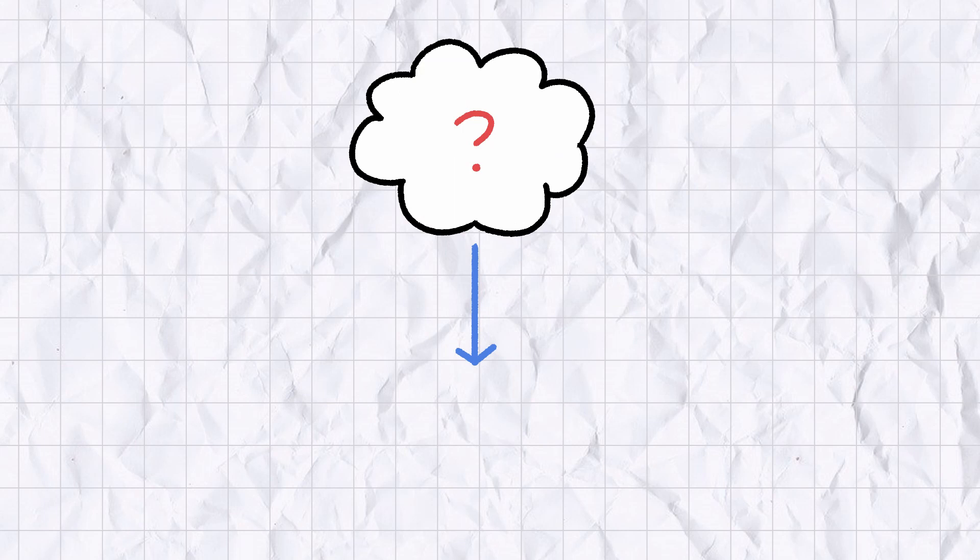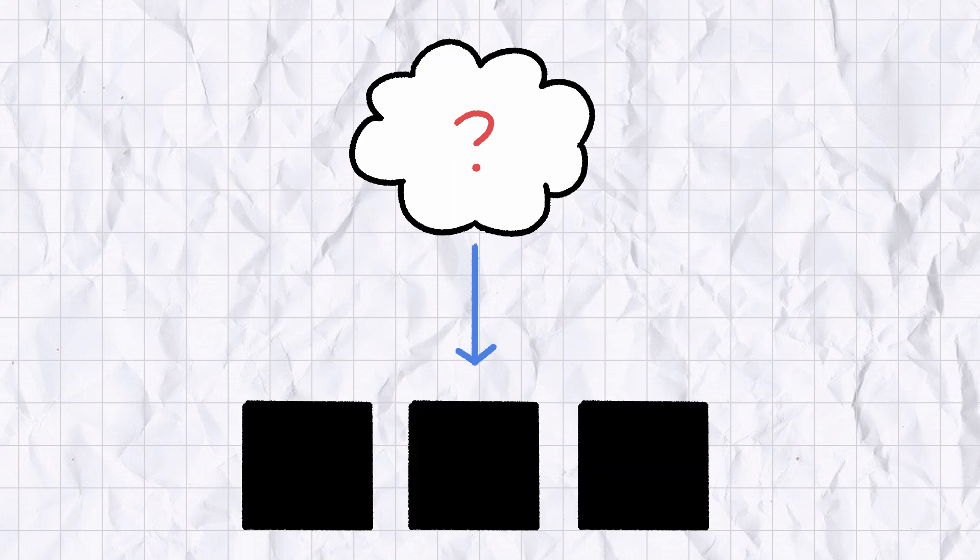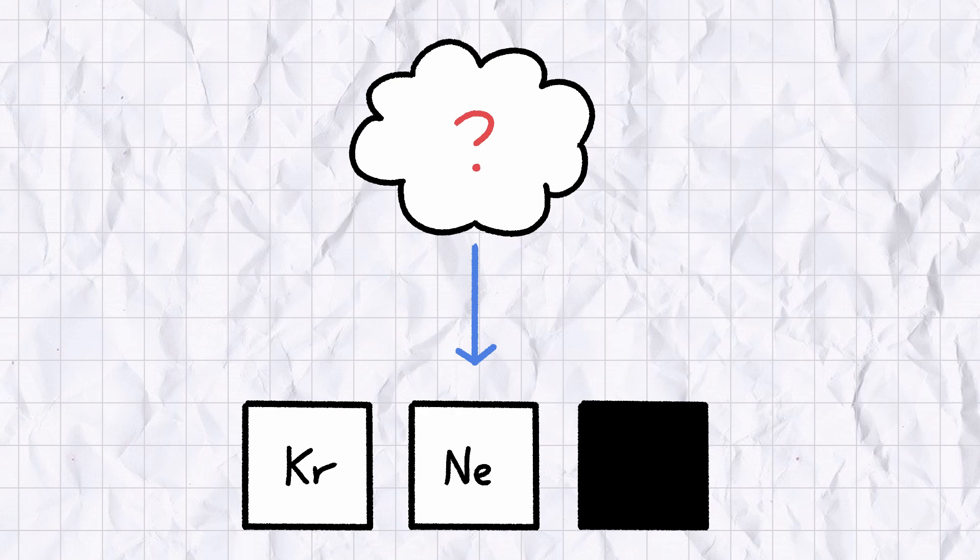After carefully separating them out, the pair realized they'd discovered trace amounts of three new elements in one go: first Krypton, then Neon, then Xenon.